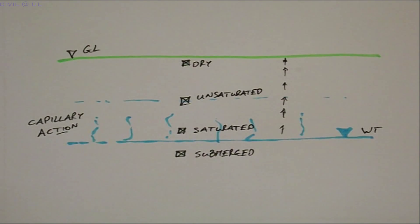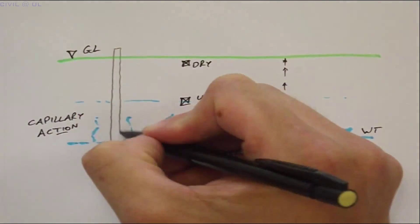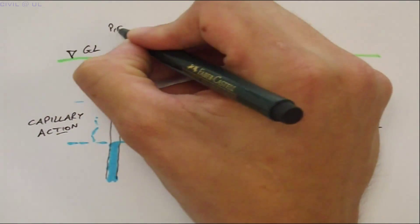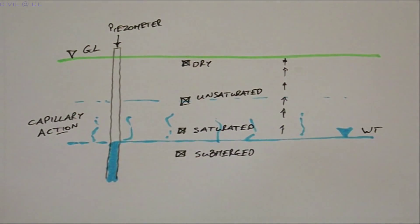So the geotechnical engineer needs to be able to determine where each condition occurs. This is typically done by installing special pipes, known as standpipes or piezometers, to monitor the water table.